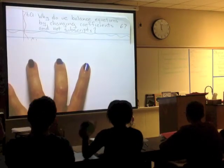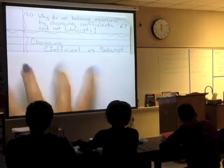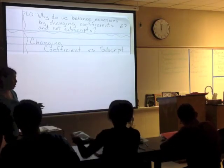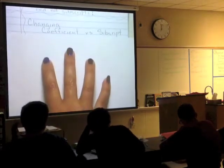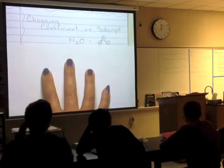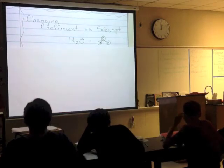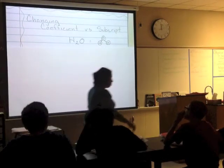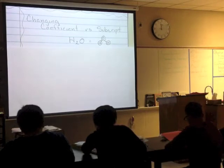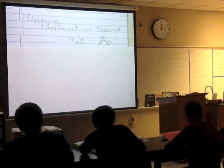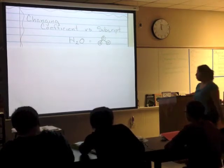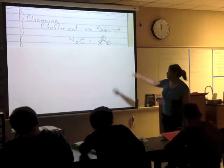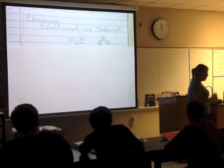We're going to look at changing a coefficient versus changing a subscript — what does changing a coefficient do compared to changing the subscript? We're going to look at a very simple chemical formula that everybody knows: H2O. H2O is water. We know it's a compound, and that compound tells us that we have two hydrogens and one oxygen all stuck together. Those three atoms are bonded together.